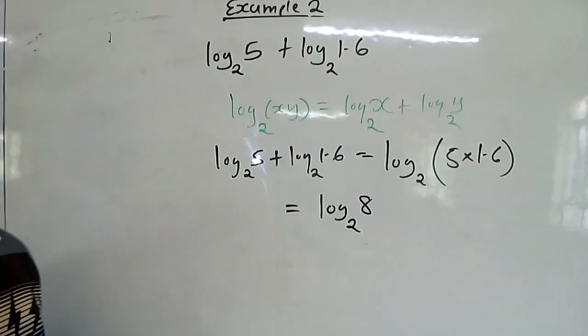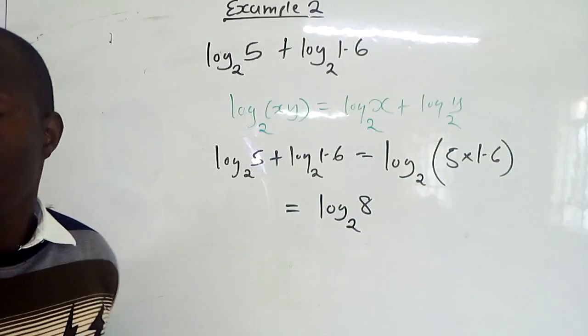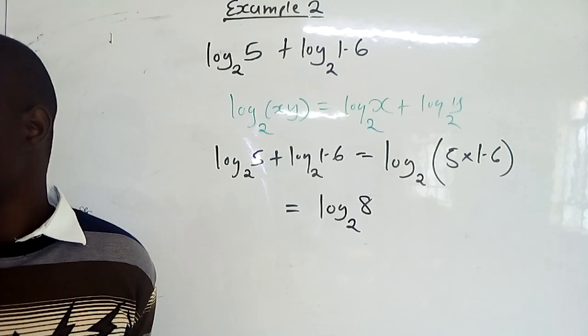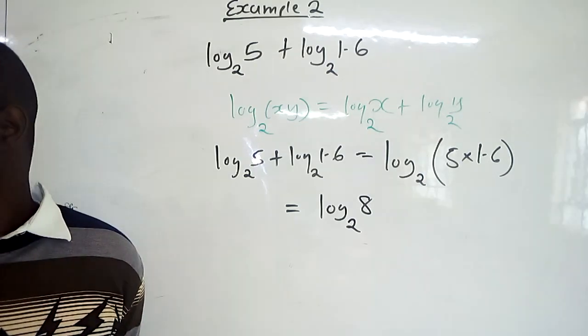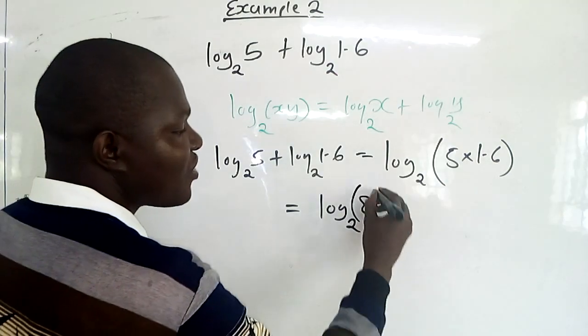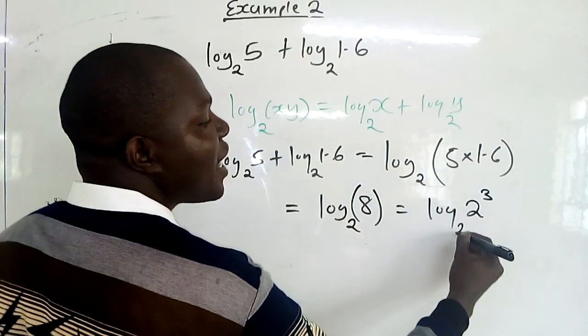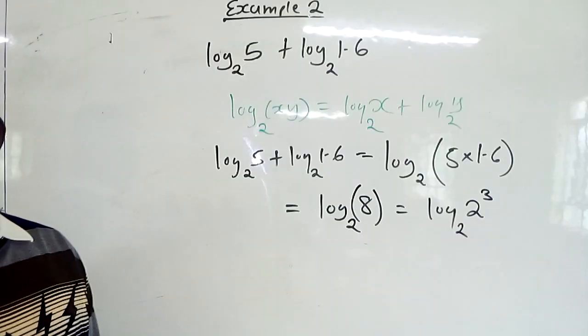Then, after getting this, you check: Are you able to factorize 8 in a manner that you can get it in terms of 2? You can factorize 8. 8 is the same as 2³. So where there is 8, we will have log₂(2³).